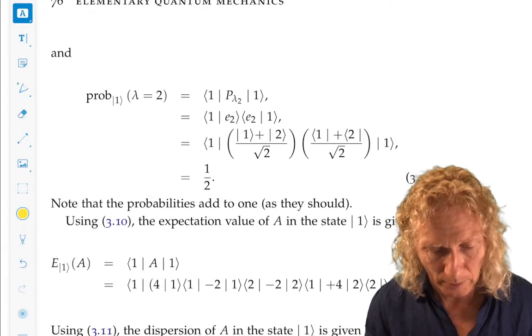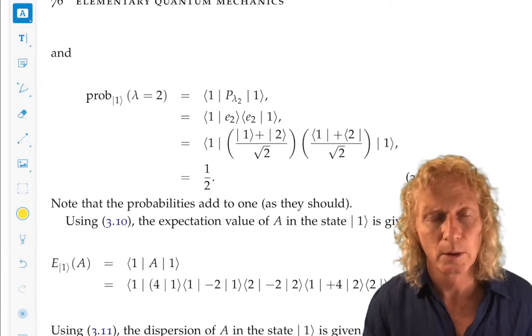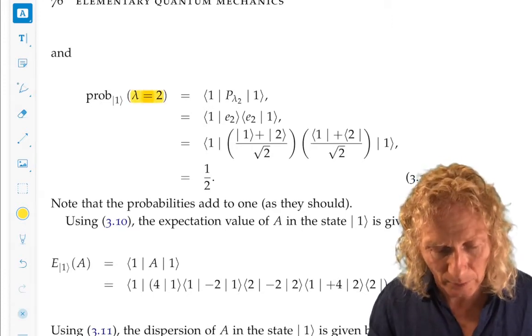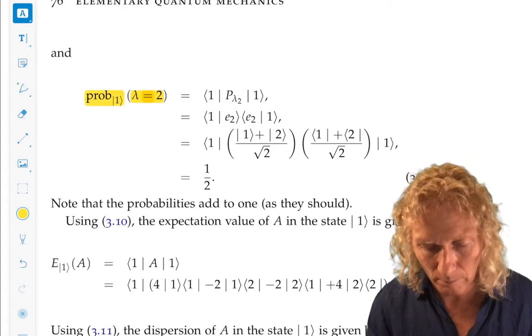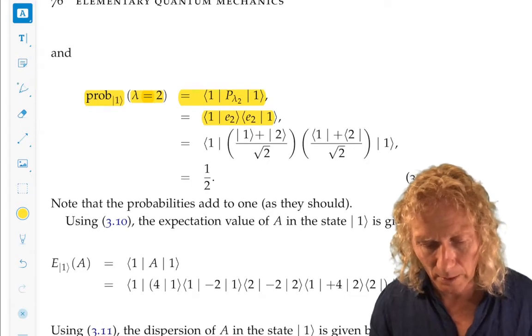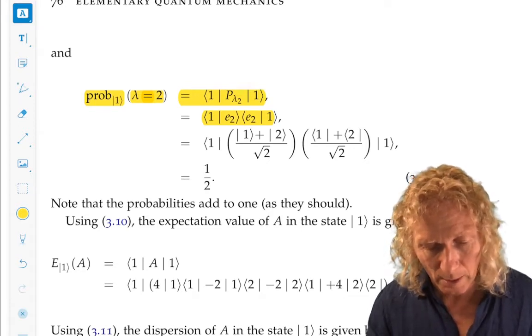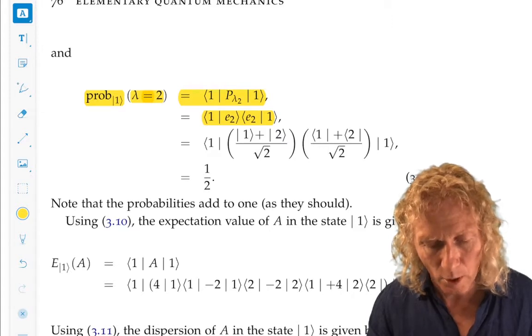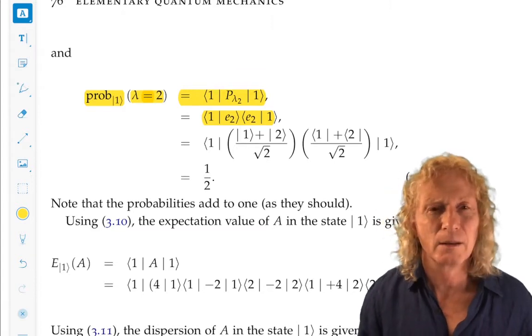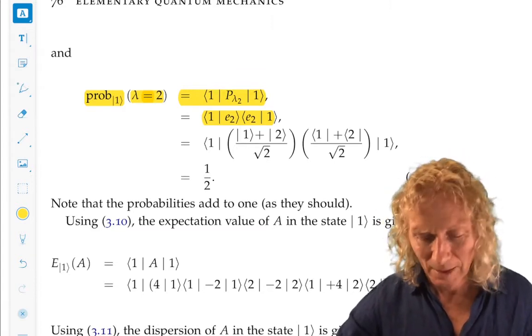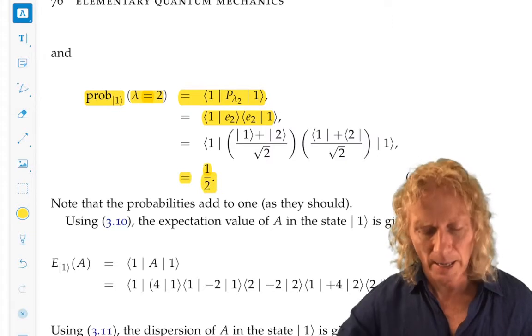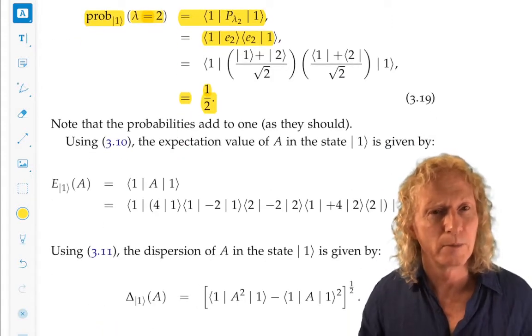And you can also, similarly, compute the probability of computing the other eigenvalue. The outcome is always going to be an eigenvalue. In the same state ket 1, you need to change between the eigenbasis and this. Alternatively, you could write bra 1 ket 1 in E1, E2 notation. If you really want to practice, and I hope you do, try it, try calculating it that way. But you're going to get a half. So the probabilities add up to 1, as they should.